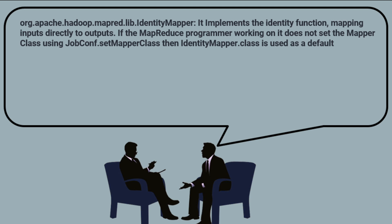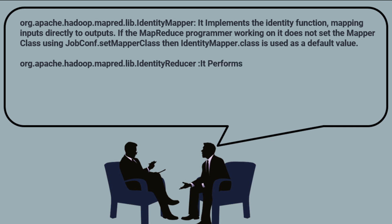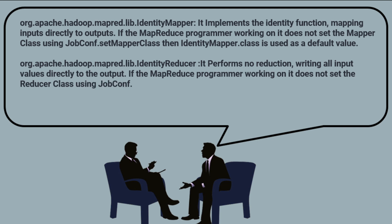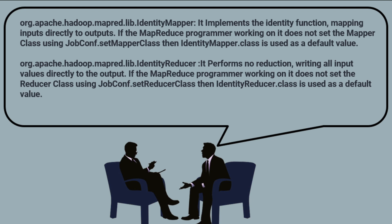On the other hand, org.apache.hadoop.mapred.lib.IdentityReducer performs no reduction, writing all input key-value pairs directly to the output. If the MapReduce program does not set a reducer class using job.setReducerClass(), then IdentityReducer.class is used as the default value.